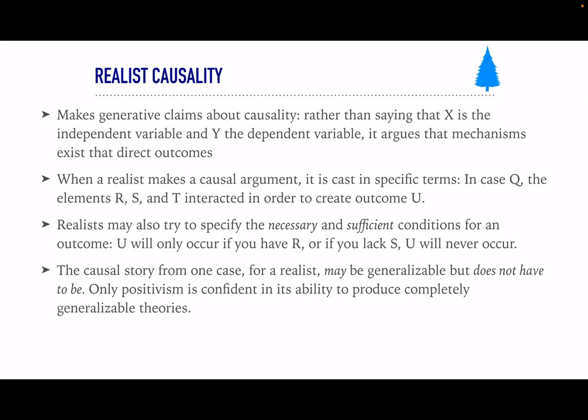Realists can also try to specify necessary and sufficient conditions. For example: I've looked at a bunch of cases and you only get outcome U where you have R. There are certain combinations of variables that will produce it, but you've got to have R. That doesn't mean R is sufficient — you might have R and nothing else and still not get U. But if you don't have R, no matter what else you have, you won't get U. The sufficient condition is different: if you have S, you will always get U. A causal story for a realist may be generalizable — they prefer when it is — but if it doesn't work out, it doesn't work out.